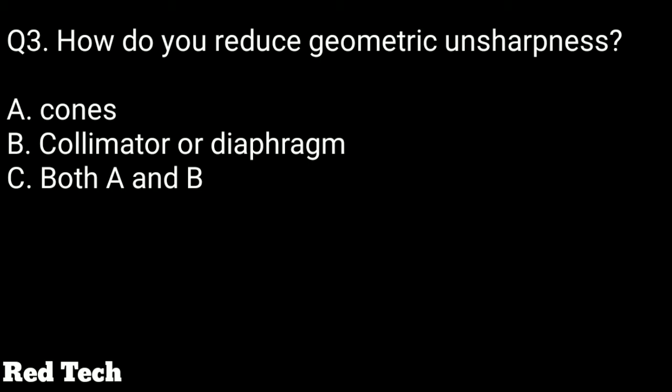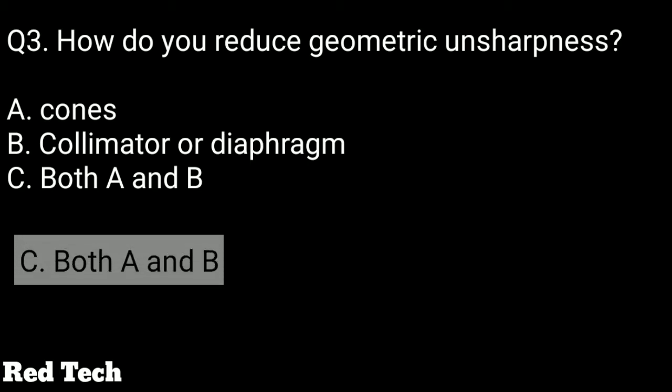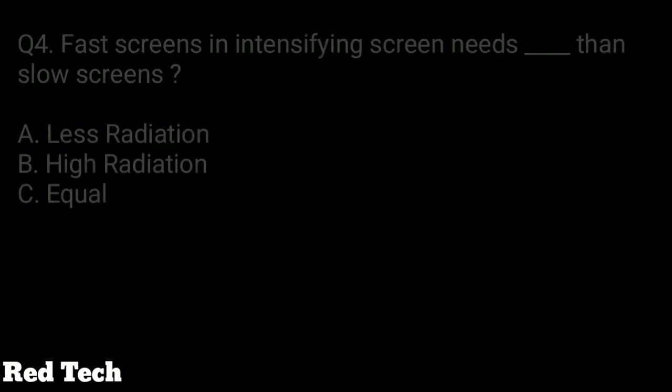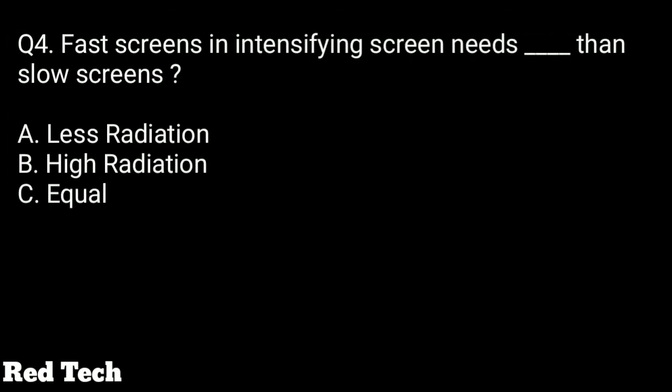Question number three: how do you reduce geometric unsharpness? The options are by using cones, by using a collimator or diaphragm, or both A and B. The right answer is both A and B — using cones, a collimator, or a diaphragm reduces geometric unsharpness.